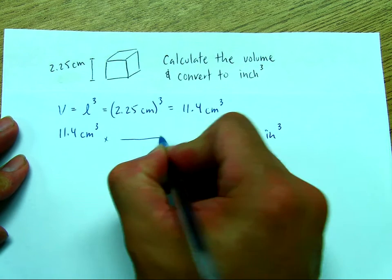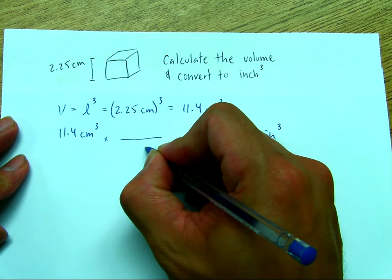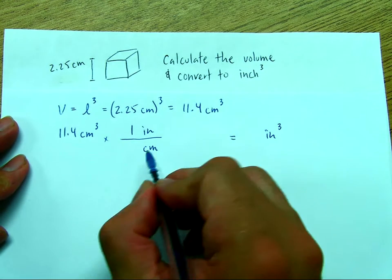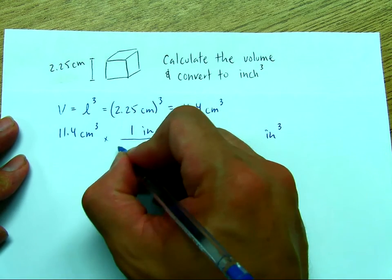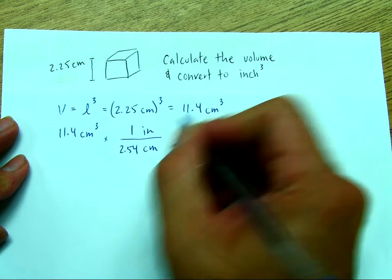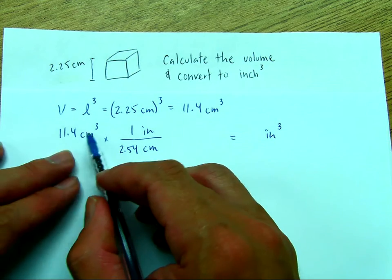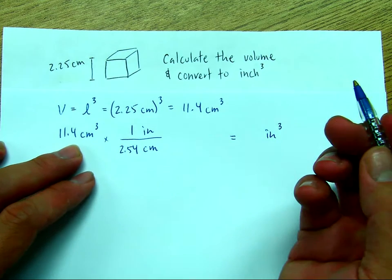Okay, so we know the relationship between 1 inch and cm is that for every 1 inch, we have 2.54 cm, right? But if we don't cube it, then the cm cubed will never cancel.